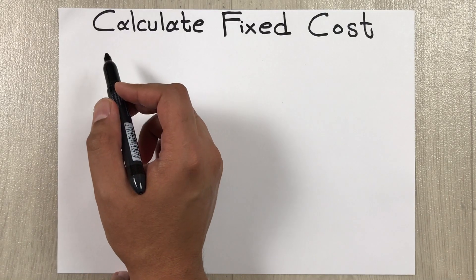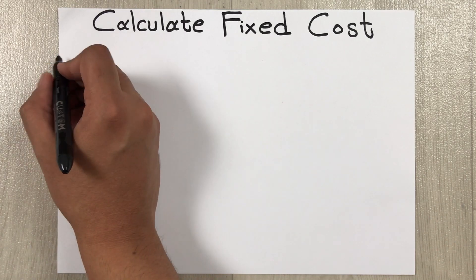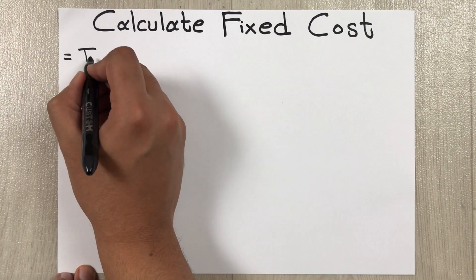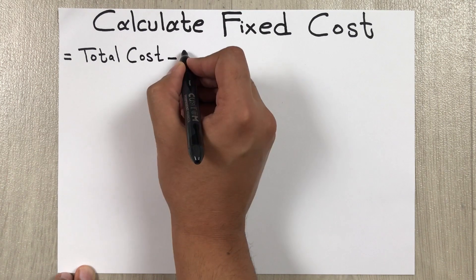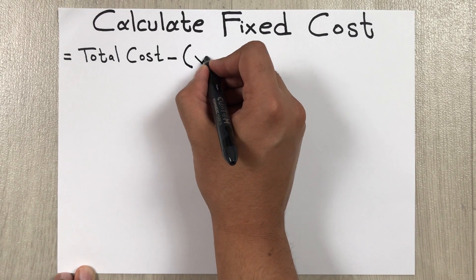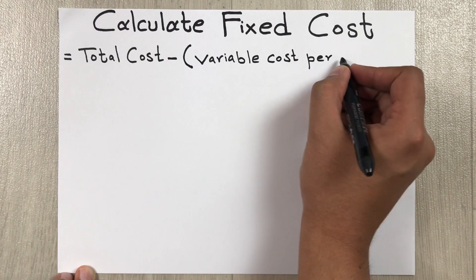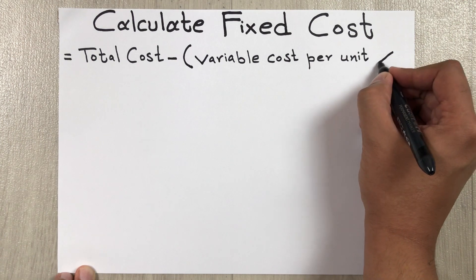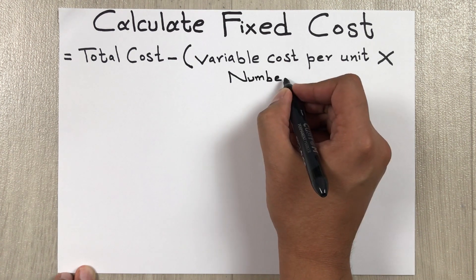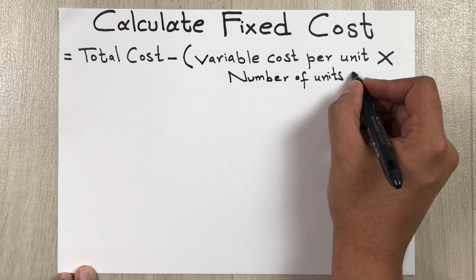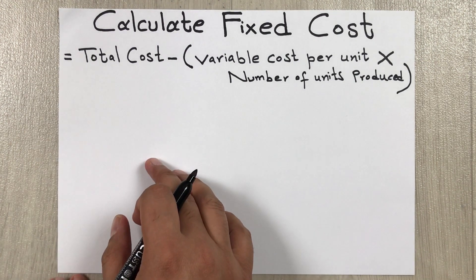Hello guys, I hope you are doing really well. In today's video I am going to show you how to calculate fixed cost. The formula to find the fixed cost is: Fixed Cost = Total Cost minus, in brackets, variable cost per unit multiplied by number of units produced.